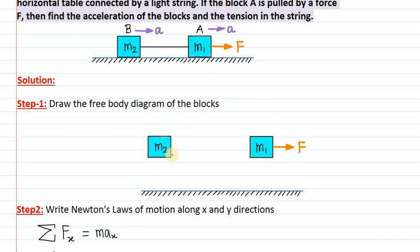So that we can show only the forces acting on M1 and M2. On block M1, a force F is already acting on it. In addition to that, gravitational force will be acting vertically down on block M1 as M1 times G. Similarly, on block M2, the force will be M2 multiplied by G. This is the gravitational force of the earth, always acting vertically down.